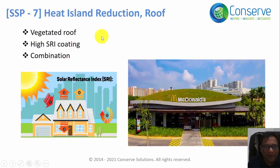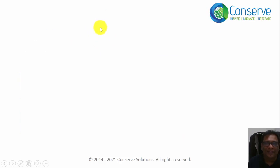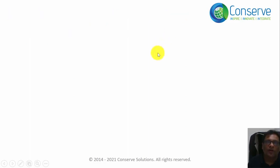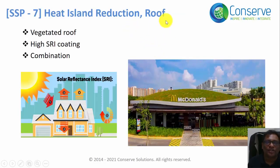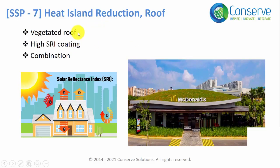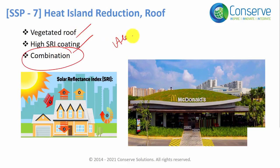Let us discuss the compliance requirements for the credits. There are two credits associated with heat island reduction: Credit 6 covers non-roof surfaces, and Credit 7 covers roof surfaces. The intent is to reduce heat island effect. For roof credits, projects should implement either a vegetated roof or high SRI coating, or a combination of both. Credits are awarded based on the area of vegetated roof and/or high SRI coating, and projects can earn up to 2 points.